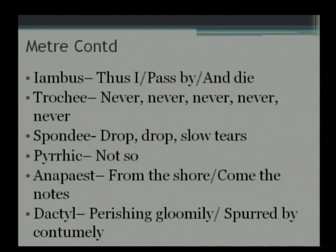An easy way to remember is: first take the Iambus, and then you know the opposite of Iambus is the Trochee. Then you have the Spondee, and the opposite of Spondee is the Pyrrhic. Then you have the Anapaest, and the opposite of Anapaest is the Dactyl. That makes it quite mathematical. So, my dear students, all you have to do is remember them in pairs — we talk of binaries. It becomes very easy if you remember it that way.